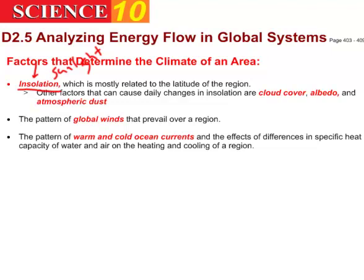There are other factors too. There's how much cloud cover you have, because clouds can reflect heat back to the earth, and if you don't have many clouds the heat will escape. Albedo is the reflectivity of the surface — snow-colored surfaces reflect a lot of heat back out. And how much atmospheric dust you have also matters, because dust scatters light and is involved in the absorption of heat.